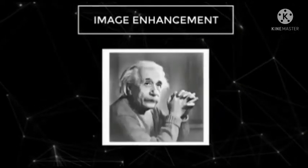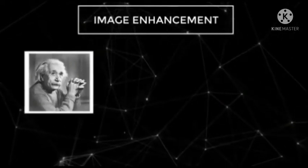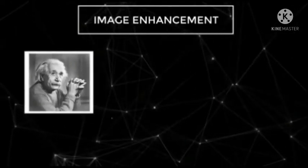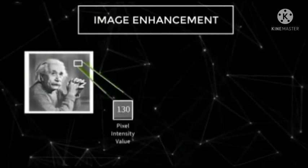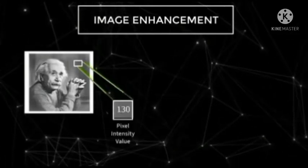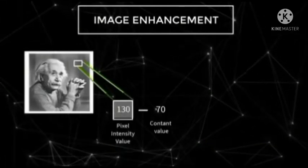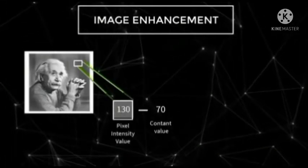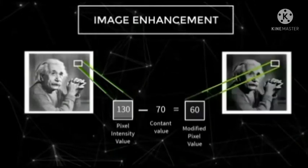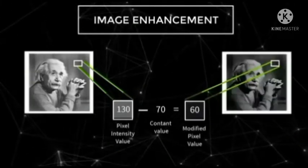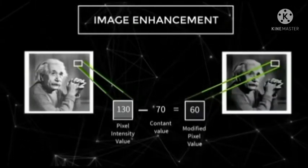Suppose an image is overexposed and needs a reduction in brightness. Then simply by subtracting a constant number from the pixel intensity value, we can reduce the brightness of the image to make it look more realistic.